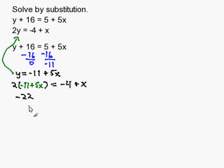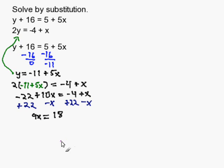I distribute. I'm going to get all the variables on one side and all the numbers on the other side. Subtract x on both sides and add 22 on both sides of the equal sign. My resulting equation is 9x equals 18. Then I divide both sides by 9 to solve for x, and x is equal to 2.